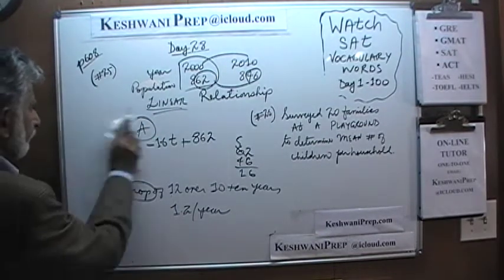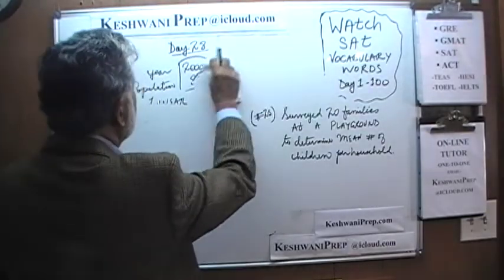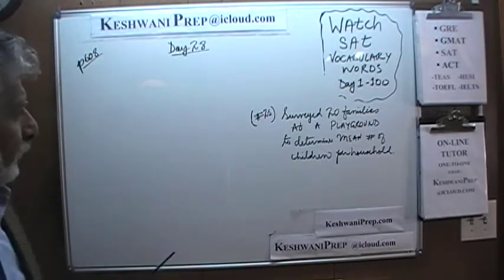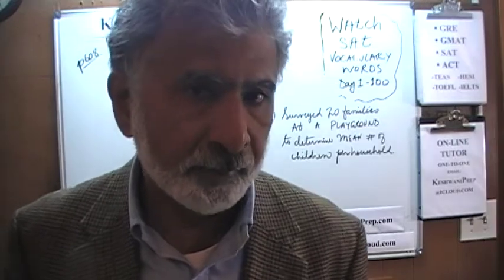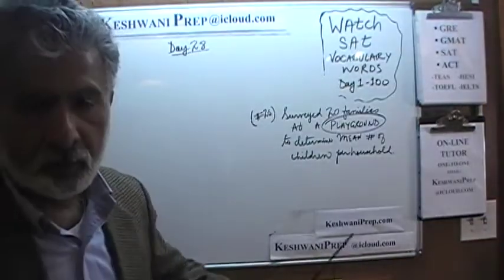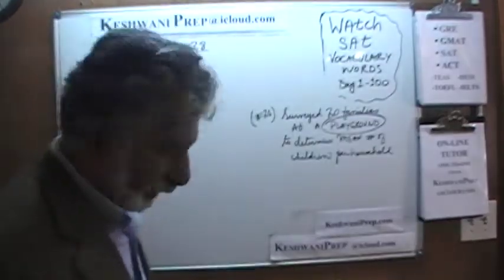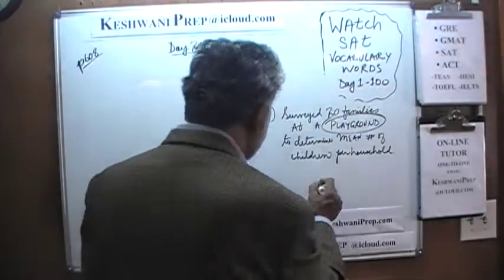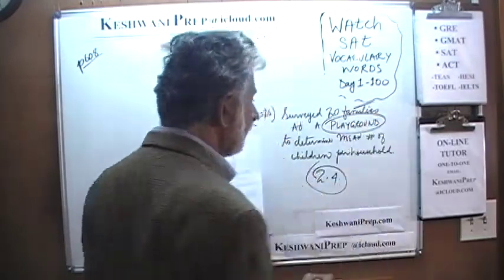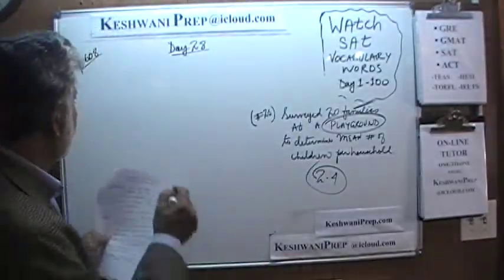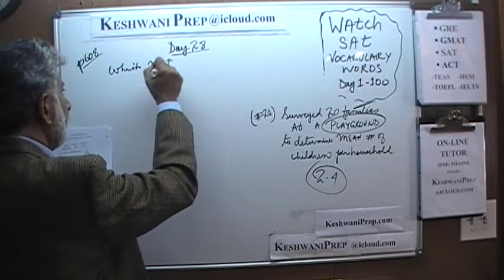Let's take a look at the next one — question number 26. It's already on the blackboard. We are told that a survey is being done to determine the average number of children per household in our community. Being the bright person that I am, I went straight to the playground and picked 20 families there, asking how many children they have. I found out that the mean of these 20 families I surveyed was 2.4. The question is: which of these four statements must be true?